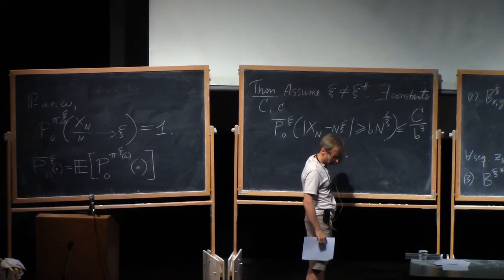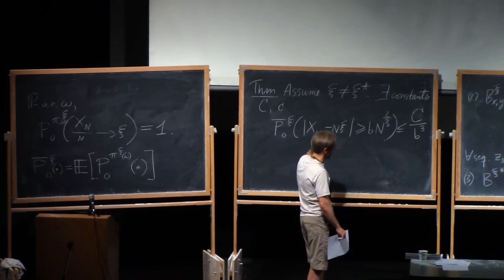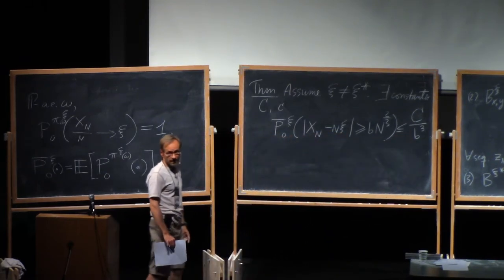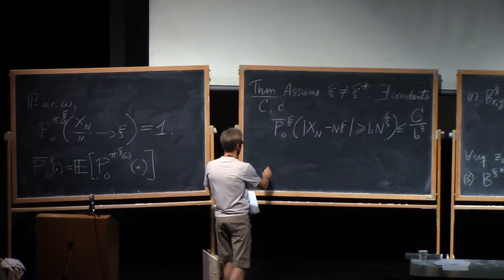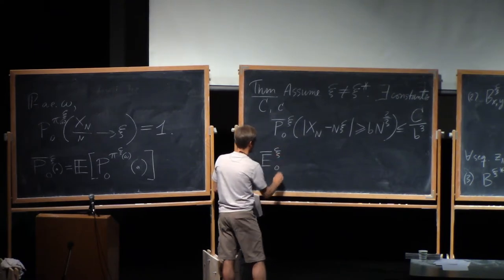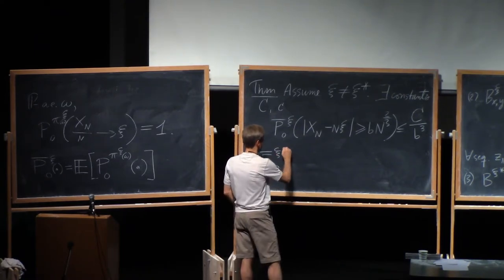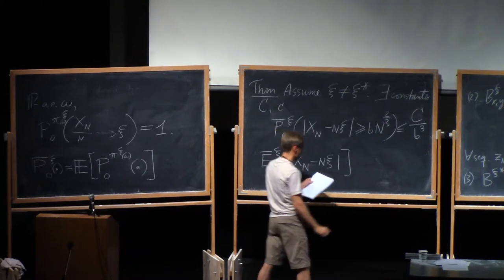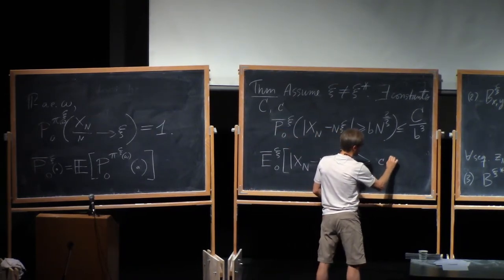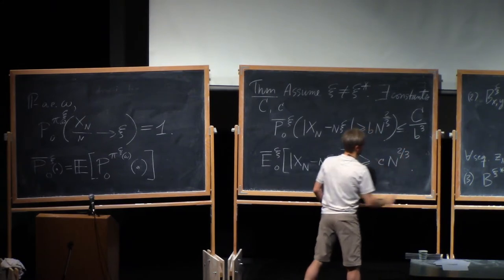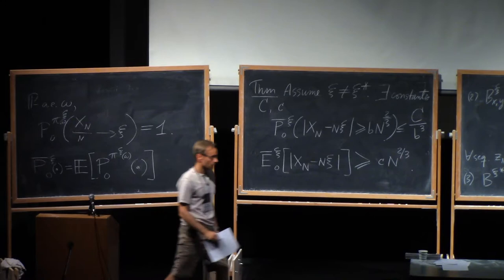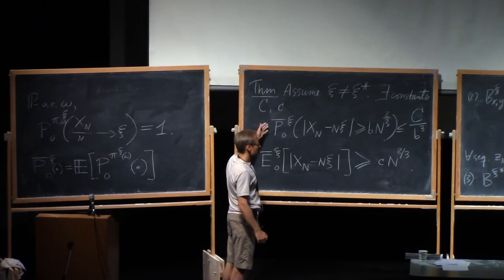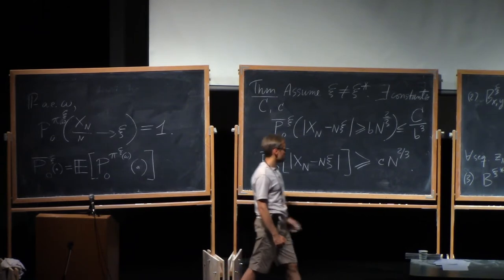Here we go again. You ask to deviate by some large number b times n to the 2 thirds, then the probability is small. So this says that the fluctuations are not larger than n to the 2 thirds. And then from the other side, here's a slightly different kind of statement. Take the expectation of the deviation. Then that is at least this little c times n to the 2 thirds. So those two statements are different, but they do... Together, they say that the typical order of fluctuations is n to the 2 thirds.